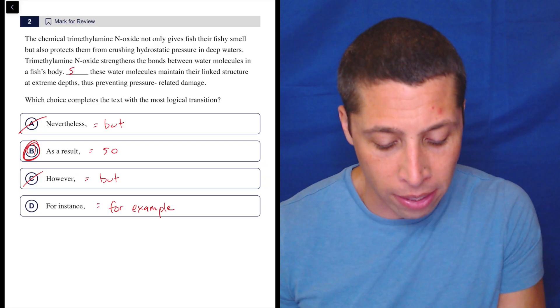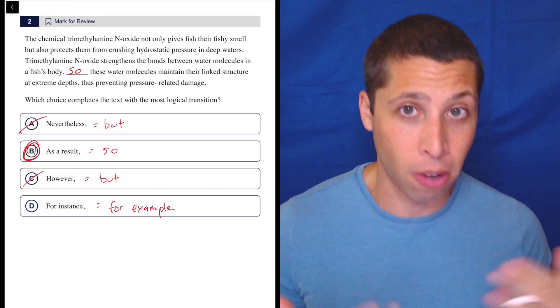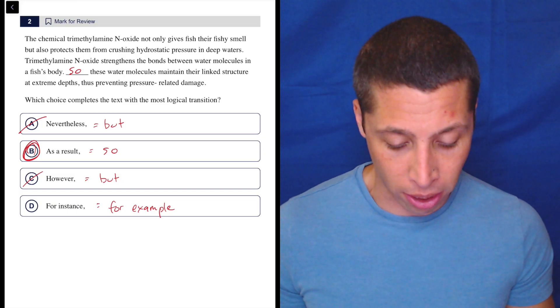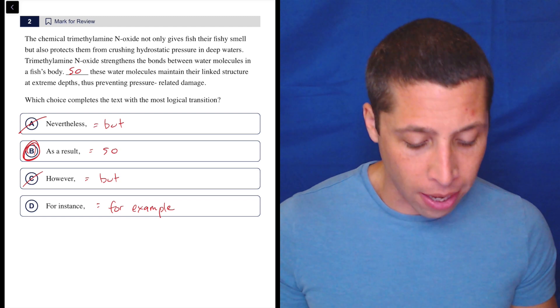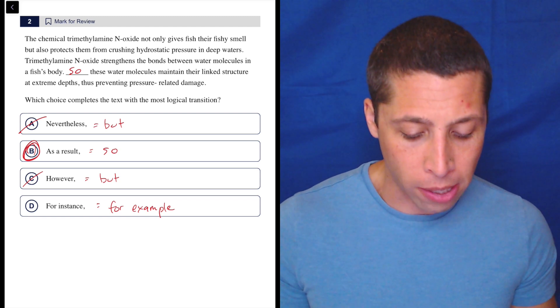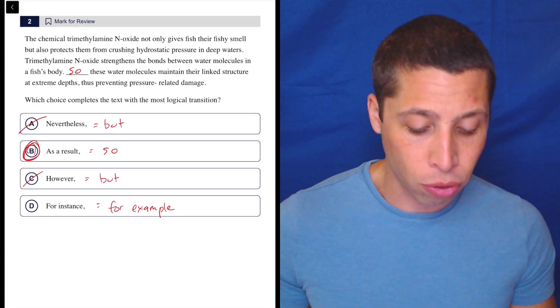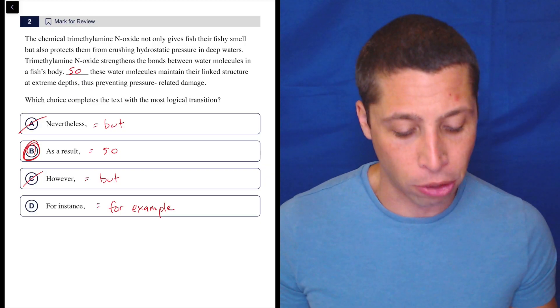Let's put that so in there. And this is the best thing about these dumb summary words is hopefully with the simpler word, it sounds very naturally like that transition. So N-oxide strengthens the bonds between water molecules in a fish's body, so these water molecules maintain their linked structure at extreme depths, thus preventing pressure-related damage.